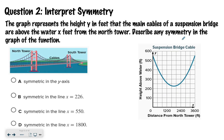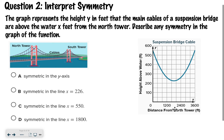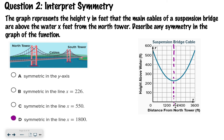Moving on to question 2: the graph represents the height y in feet that the main cables of a suspension bridge are above the water, x feet from the north tower. Describe any symmetry in the graph. We have a diagram showing the north tower, cables, and south tower, with height on the y-axis and distance from the north tower on the x-axis. Hopefully you selected answer D — that it's symmetric in the line x equals 1,800, which falls between the 1,200 and 2,400 labels on the graph.